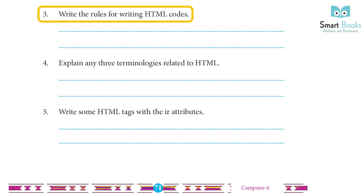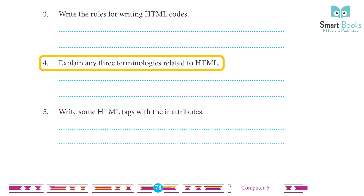3. Write the rules for writing HTML code. Answer: In order to write HTML code, we need to abide by some rules: Tags should always be surrounded by angle brackets. Values given to the attribute should be enclosed in double quotes. 4. Explain any three terminologies related to HTML. Answer: The three terminologies related to HTML are Hypertext, Markup Language, and Tag.